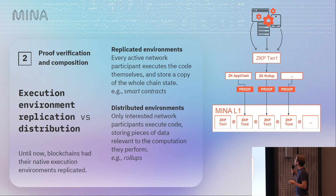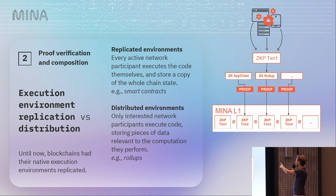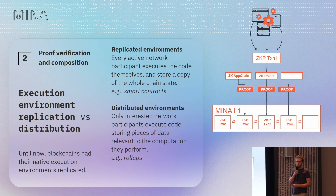In this example, we have a ZKP transaction going to a ZK rollup, which then gets settled onto the main chain. But you can imagine each one of these can be a different ZK app chain settling many tens or hundreds of TPS onto Mina.